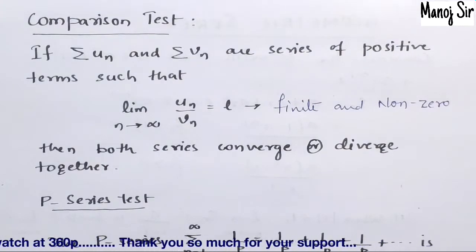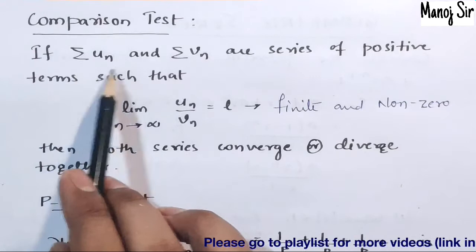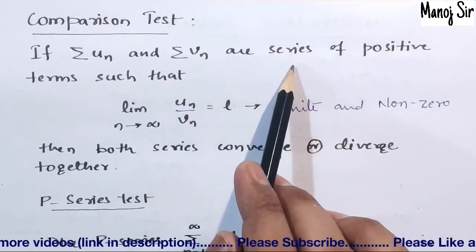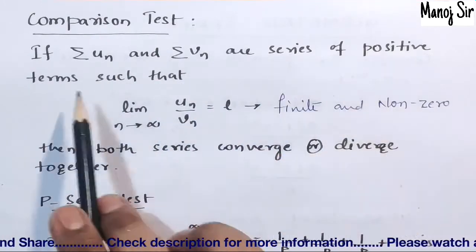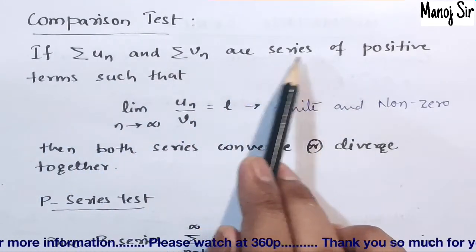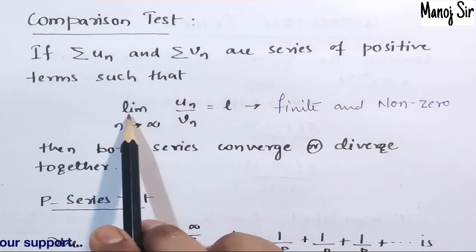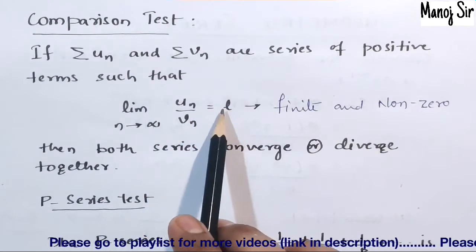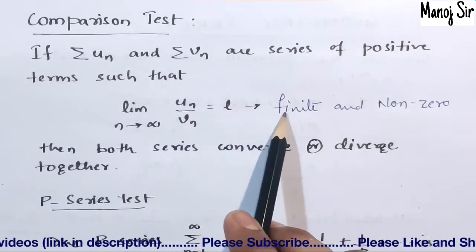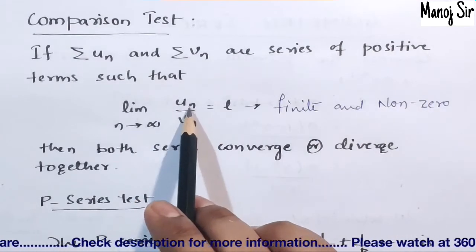Let us start the comparison test. If summation u_n and summation v_n are series of positive terms, such that the limit as n tends to infinity of u_n upon v_n equals L, where L is a finite and nonzero value, then we can apply the comparison test.